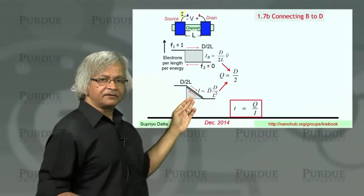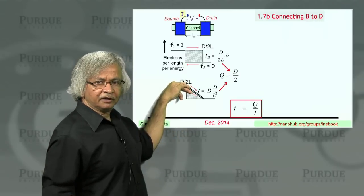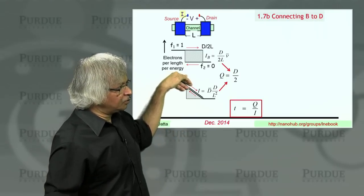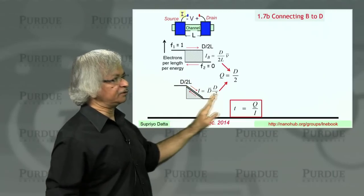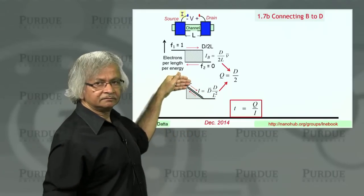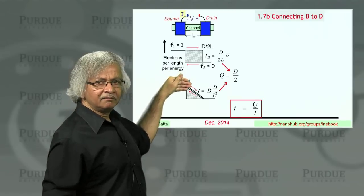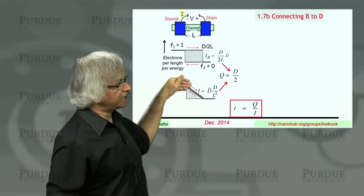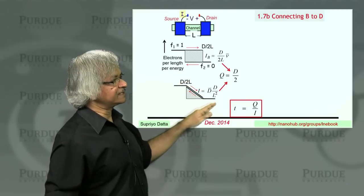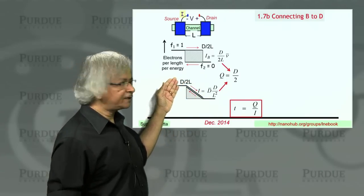Whereas in the diffusive case, northbound and southbound are about equally filled, but the occupation goes down as you get from this end to this end. Electrons come in from here, so there's lots of electrons at this end. But as you go through the channel, you have less and less remaining, because many of them have turned around and gone back.